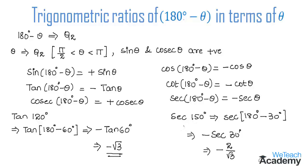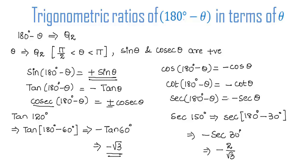To summarize: 180 degrees minus theta lies in the second quadrant, and in the second quadrant only sine and cosecant are positive while the rest of the ratios are negative. This was a basic introduction on trigonometric ratios of 180 degrees minus theta in terms of theta. Hope you understood the concept. For more videos on trigonometry, visit our website vteachacademy.com. Thanks for watching. Have a nice day.